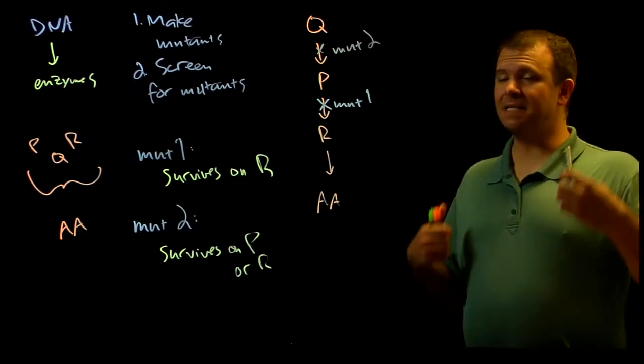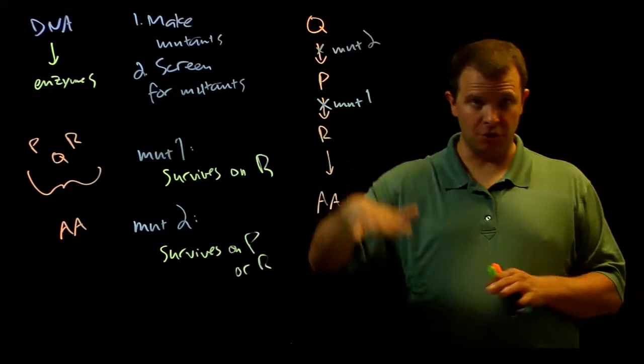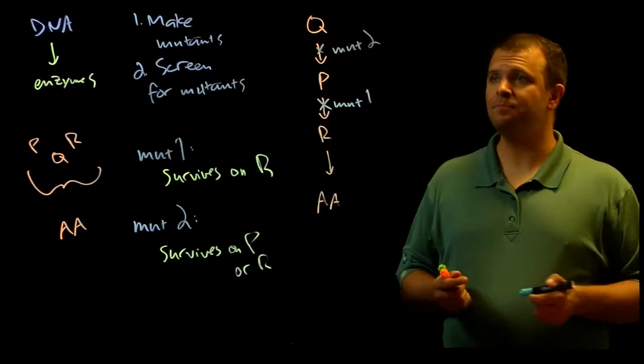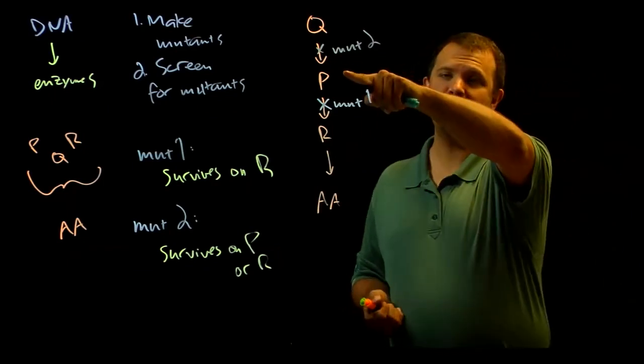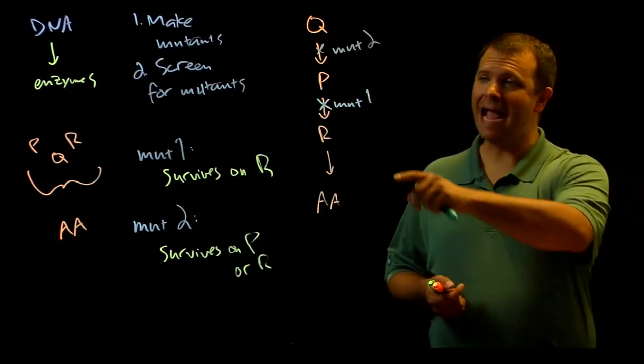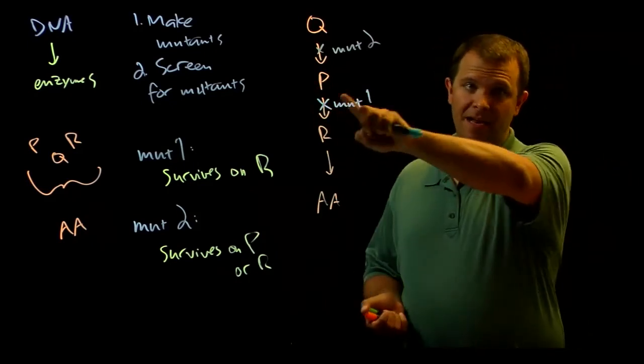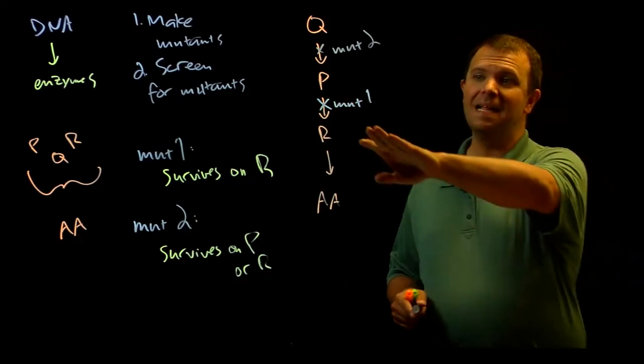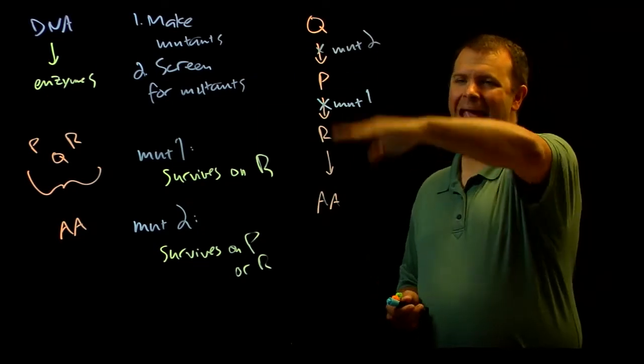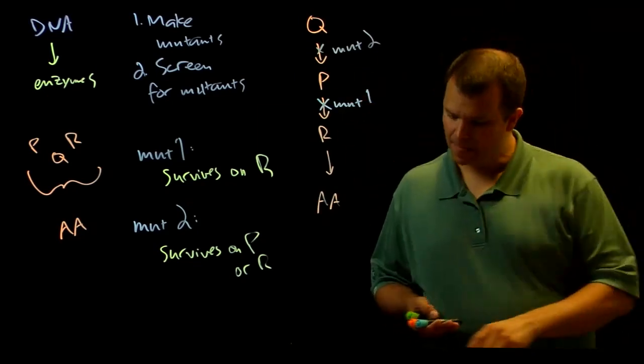This seems fairly straightforward, but there's actually a wrinkle because the biochemistry that we're doing to determine these intermediates isn't perfect. I might know that P is in this pathway and comes before R, but there may actually be another intermediate in here that I'm not finding, which means there may be more than one gene or more than one enzyme required to convert P into R.